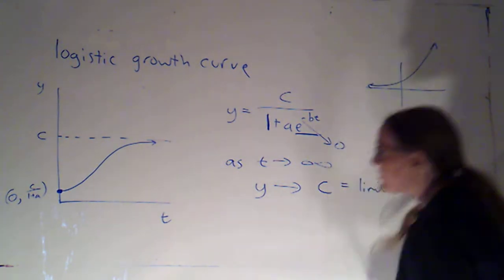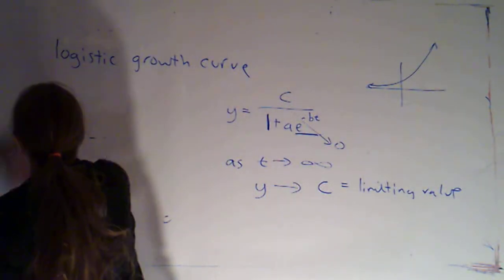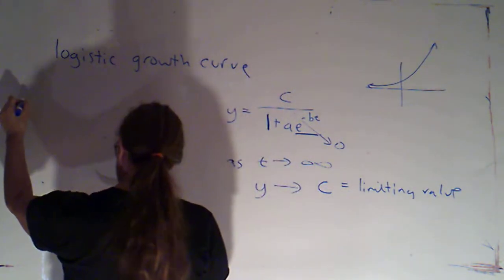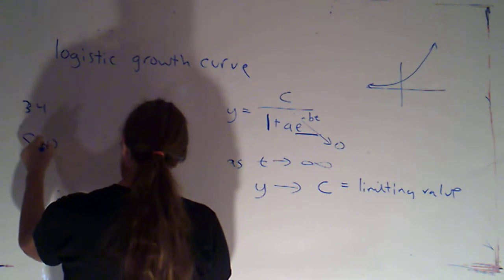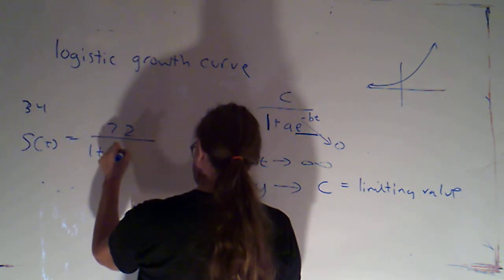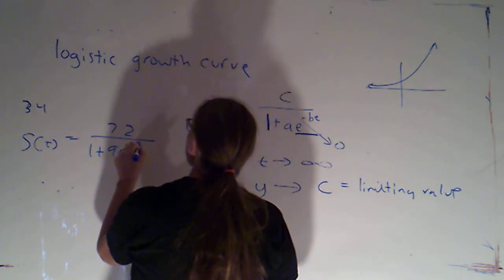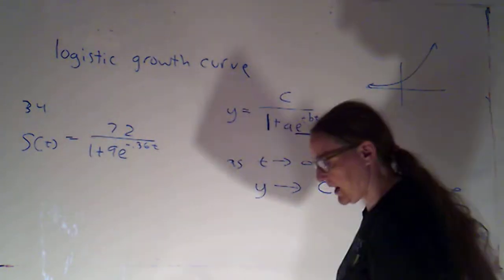So, just as a quick example, I took an even-numbered problem from your text, so this was problem 34. S of t was 72 over 1 plus 9e to the negative 0.36t.